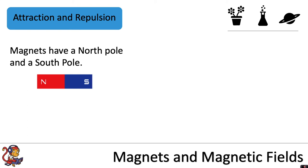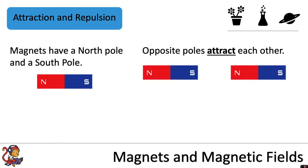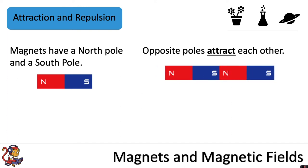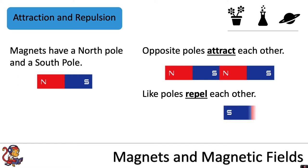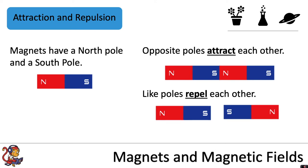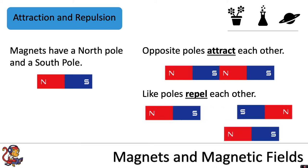Magnets have a north pole and a south pole. Opposite poles attract each other, so north and south next to each other would be attracted. Like poles repel each other, so south next to south will repel, and similarly north next to north the magnets would repel each other.